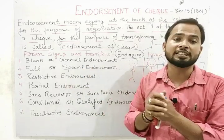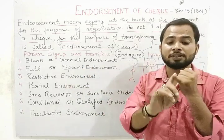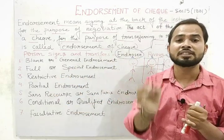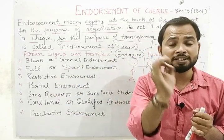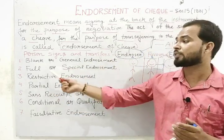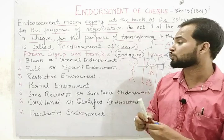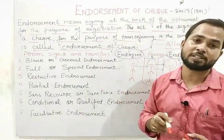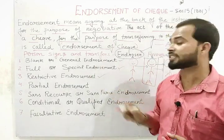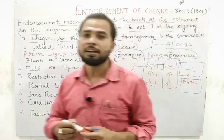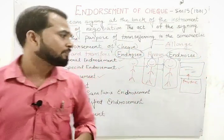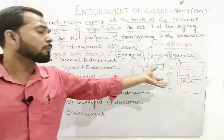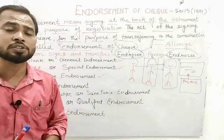The second type is full endorsement, also called special endorsement. In this type, everything is mentioned — the endorser's signature is given and the name of the endorsee is also mentioned. Such type of endorsement is known as full endorsement or special endorsement.